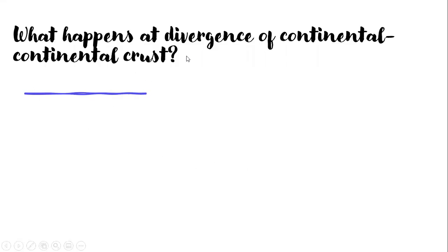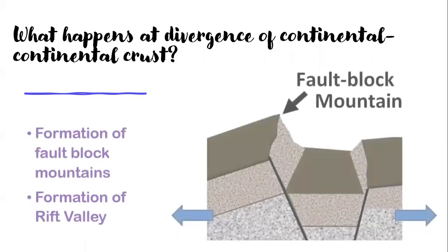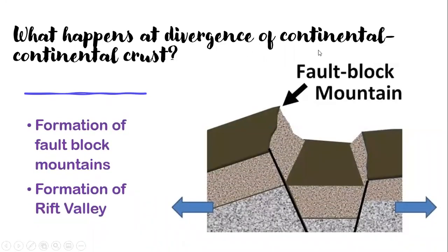What happens at the divergence of continental-continental crust? We have finished the divergence of oceanic-oceanic crust — inside the ocean, two plates were diverging and we saw seafloor spreading. Now let's move to the point where two continental crusts are diverging, meaning the plates are moving far apart with a continent on top of both plates. The first thing we have is the formation of fault block mountains.